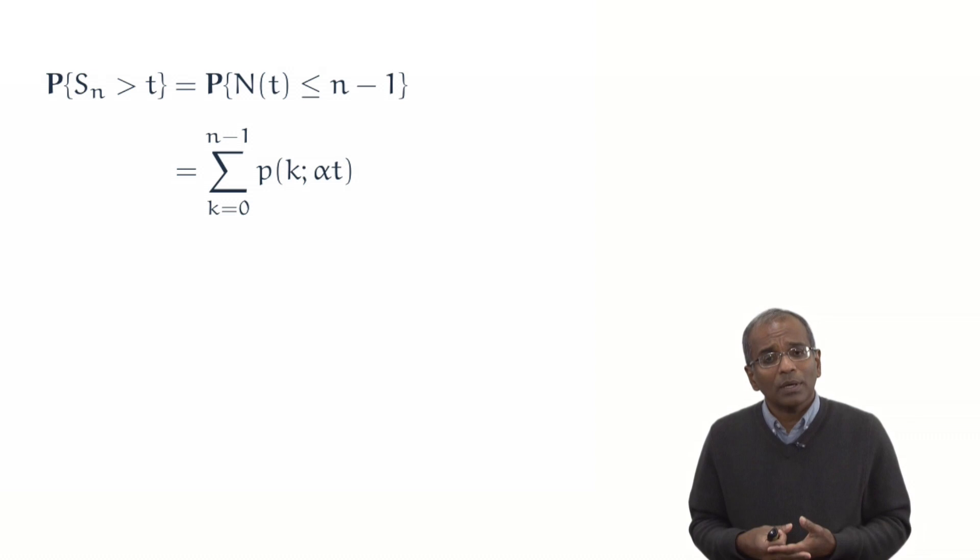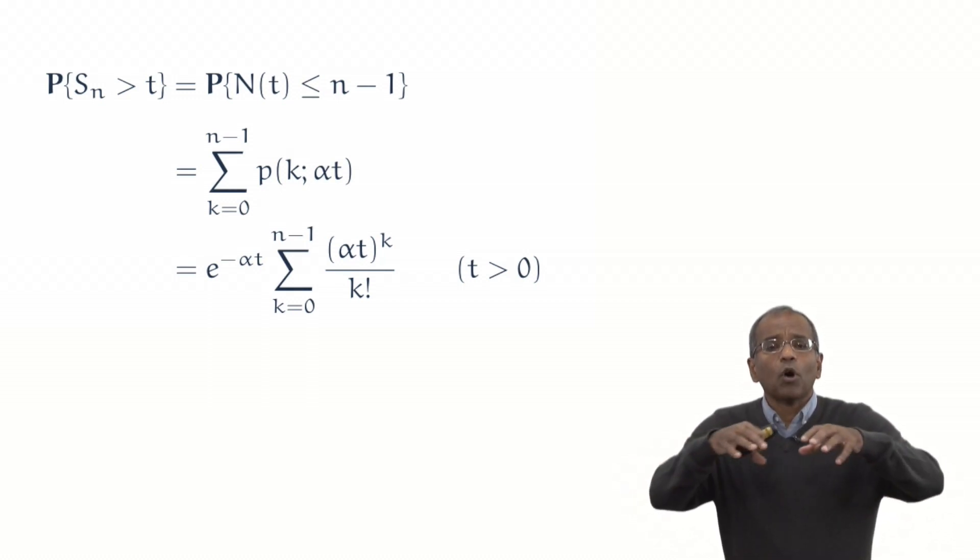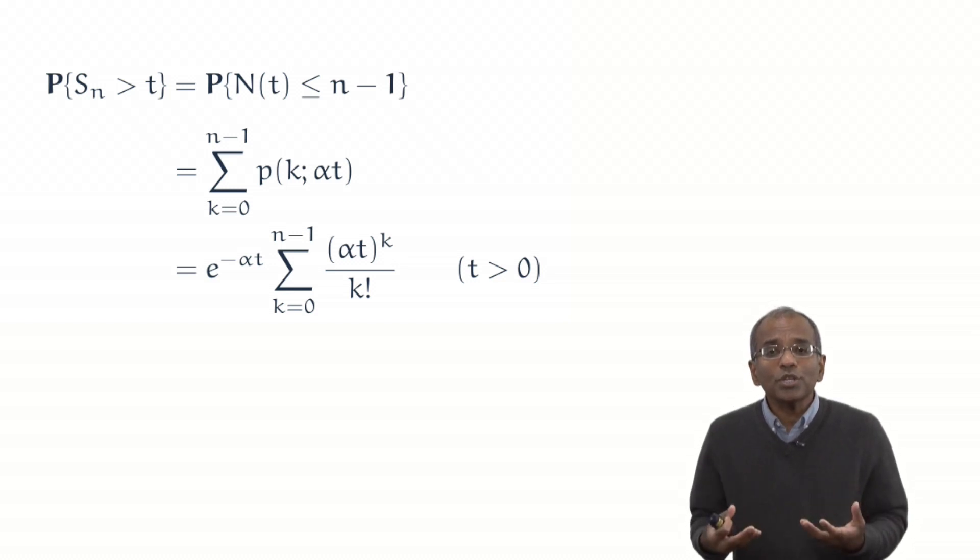Of course, we now just simply write down the Poisson formulation. e to the power minus alpha t does not depend upon k in the sum, it can be pulled out of the sum. And we've now got a simple closed form expression for the distribution of the waiting time for the nth arrival.